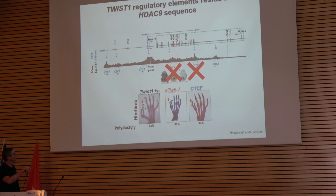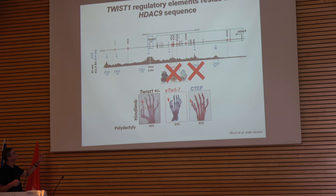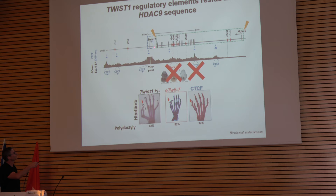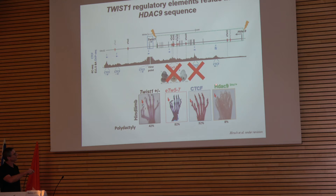Going back — these two models show limb phenotype, however both deletions affect the regulatory element of TWIST1 but also the coding sequence of HDAC9. To show it's not related to HDAC9 coding sequence, we generated a third model where we inverted the entire HDAC9 gene. Basically we didn't affect the coding sequence of HDAC9, but we relocated the TWIST1 regulatory elements. The homozygous inversion is lethal — similar to TWIST1 homozygous knockouts — and the heterozygous shows polydactyly with very low penetrance.